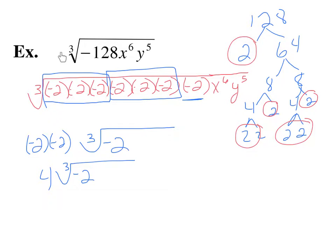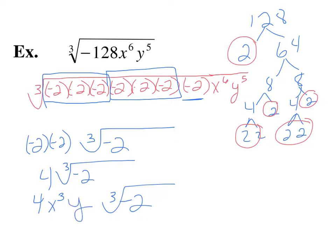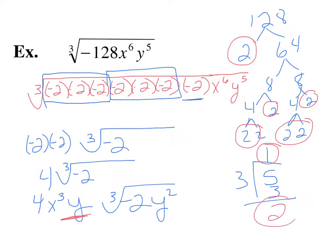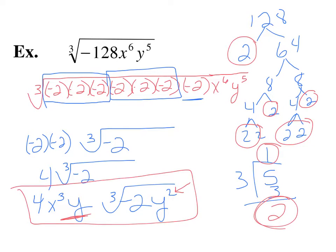Now, what do I do with the variables? Remember: divide by the index. For x to the 6th divided by 3, we get x squared with no leftovers, so x squared comes to the outside. For y to the 5th: 5 is not evenly divisible by 3, but 3 goes into 5 one time, so one y comes to the outside. After using that group of 3, you have 2 y's left over. So dividing the exponent 5 by the index 3 gives 1 remainder 2 — meaning y to the first on the outside, and y squared remains inside. This is your final simplified expression.